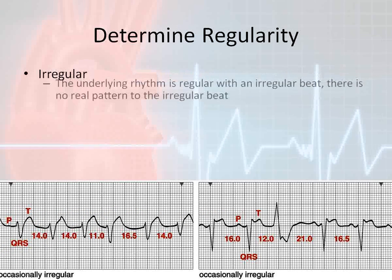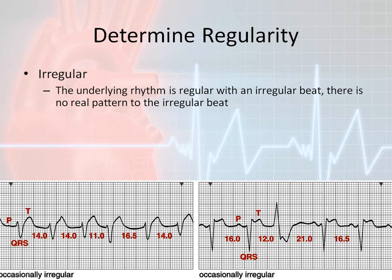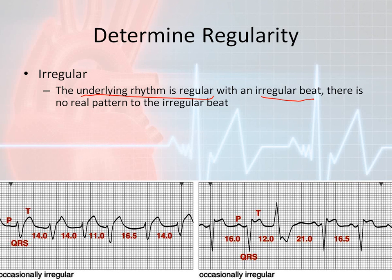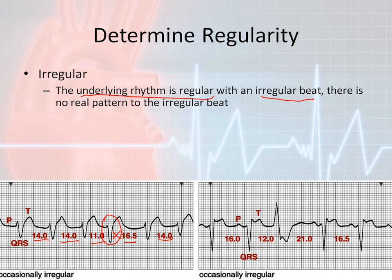For an irregular rhythm, you have to consider that the underlying rhythm is regular, but you might have an irregular beat with no real pattern to it — this would be considered irregular. Please remember: in an irregular rhythm, the underlying rhythm is regular; you just have an irregular beat. Looking at the first rhythm on the left, there's fourteen boxes here, fourteen boxes here, then eleven, then sixteen and a half — meaning this is a premature beat — but then it goes right back to fourteen boxes between QRSs.